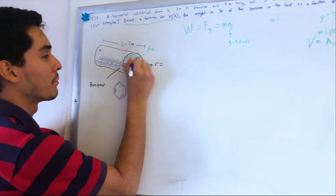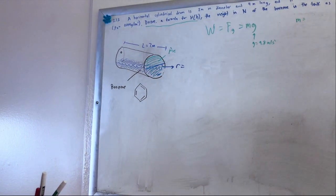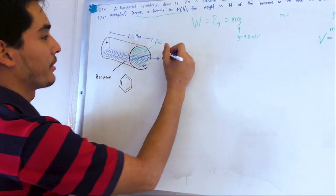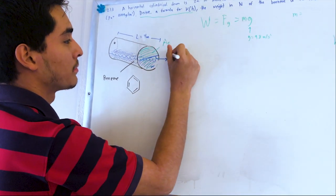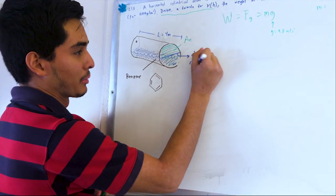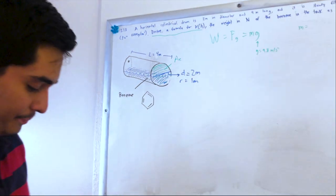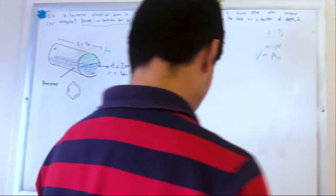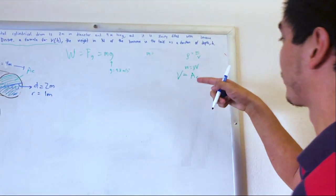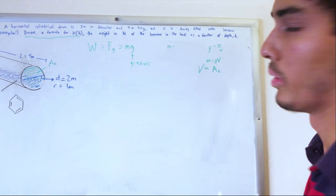Oh the diameter, the diameter is gonna be, sorry this is 4 meters. And this diameter is gonna be 2 meters. Alright and the radius is gonna be 1 meter. Right? Okay so what's next?